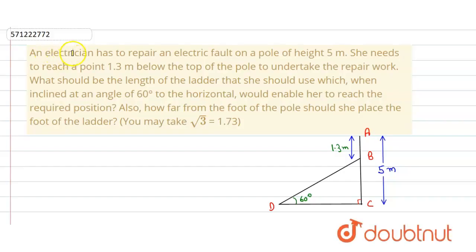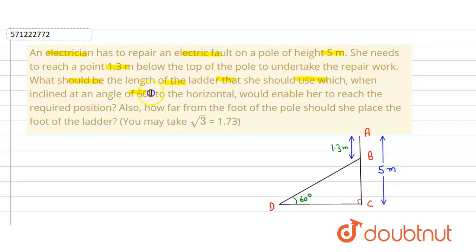In the given question, an electrician has to repair an electric fault on a pole of height 5 meters. She needs to reach a point 1.3 meters below the top of the pole to undertake the repair work. What should be the length of the ladder she should use, which when inclined at an angle of 60 degrees to the horizontal would enable her to reach the required position? We also have to find how far from the foot of the pole she should place the foot of the ladder.